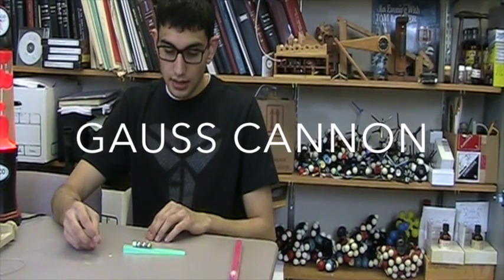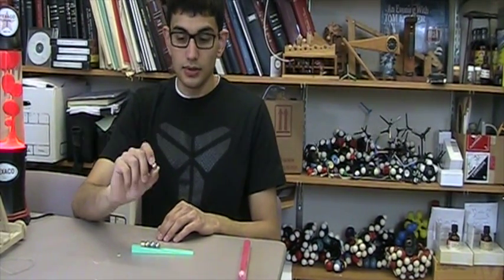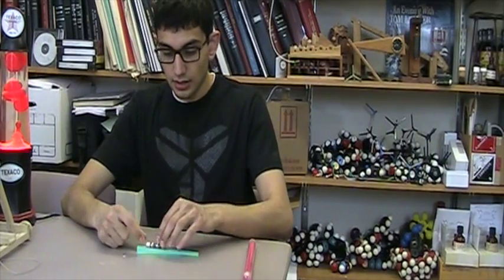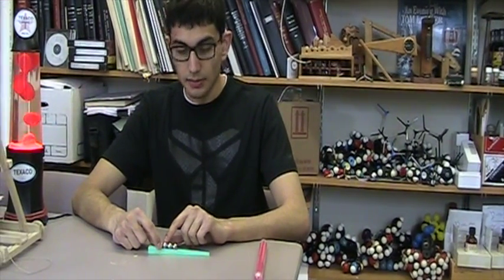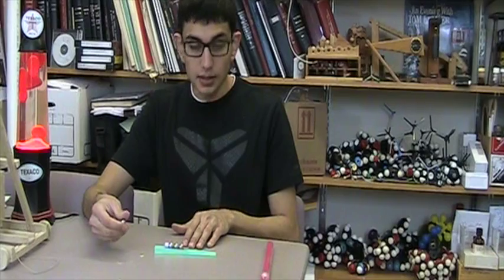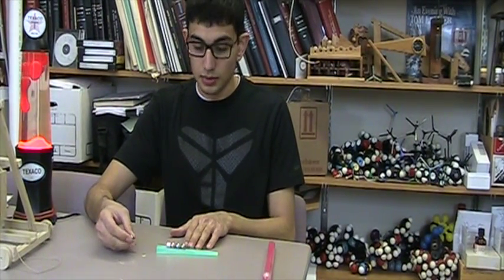This here is a Gauss cannon, and it is made up of steel ball bearings and two very strong neodymium magnets. I'll demonstrate how it works and explain the principles behind it.